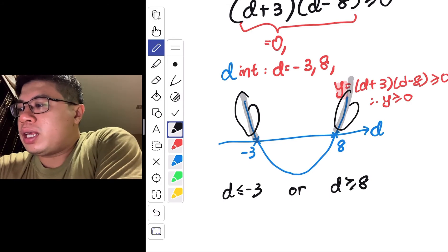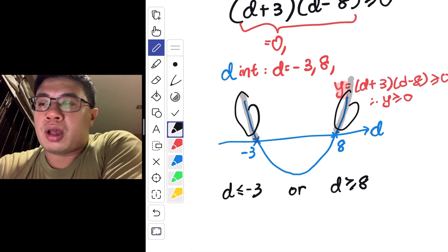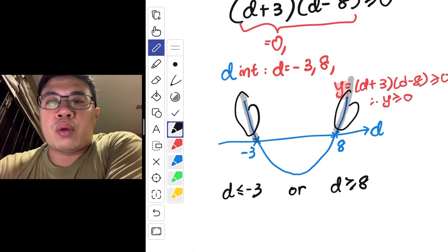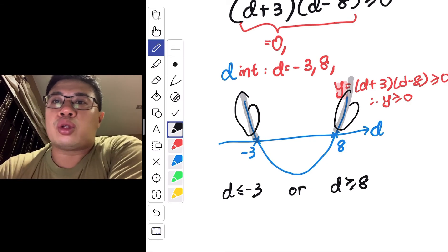And definitely it's an or. It cannot be an and. So again, when we solve question, we must always take note of the context of the question.